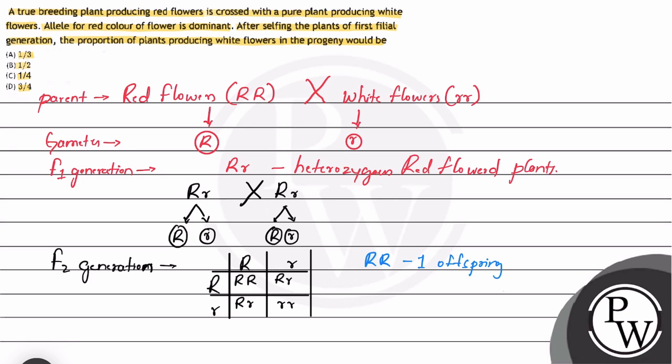The first will have homozygous red-flowered plants. The second and third offspring will have heterozygous red-flowered plants. The fourth offspring will be small r small r. As it is recessive and both recessive genes are present, it will express itself. That is why we have homozygous white-flowered plants.